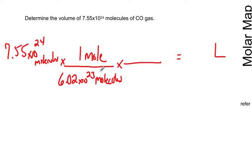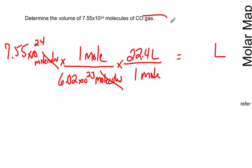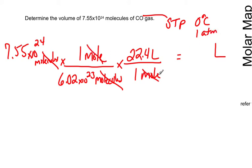That cancels out molecules for us, but it gets us to moles. We want to get to liters, so we're going to keep going. Put one mole down here, and we know one mole of any gas at STP is 22.4 liters. This is a gas, and we're going to assume it's at STP — zero degrees Celsius and pressure at sea level, one atm. So moles cancels.